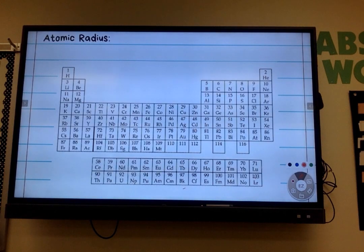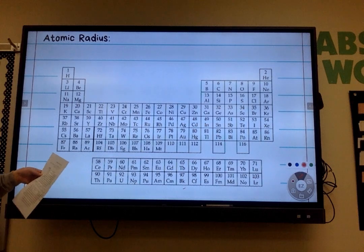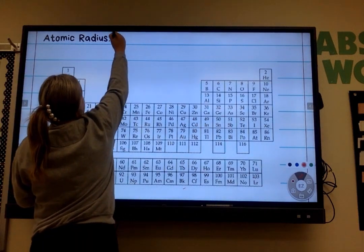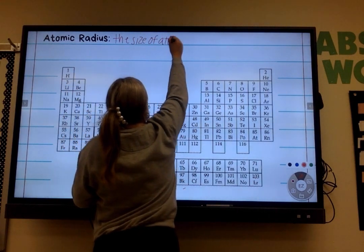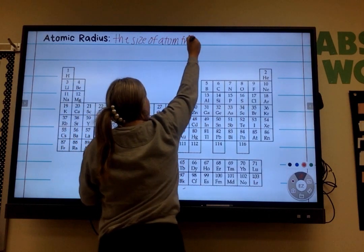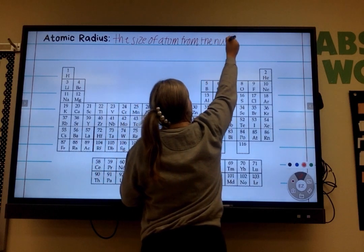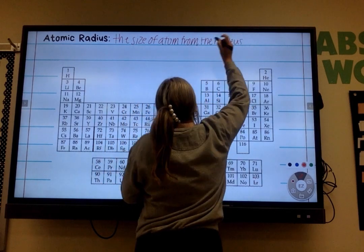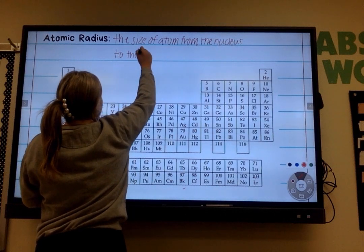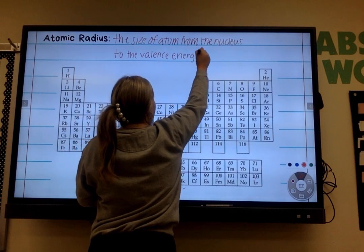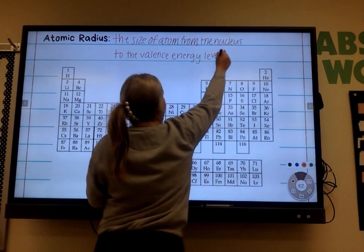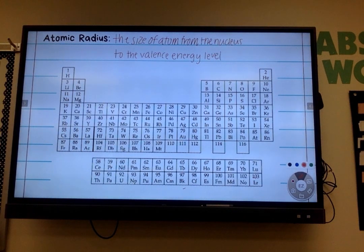First one we're gonna do is atomic radius. You should know the word radius from math class at some point. We know that that has to do with size. I want you writing out that it specifically is the size of an atom from the nucleus to the valence energy level. We learned about valence energy levels on Monday. Who can tell me what a valence energy level is?